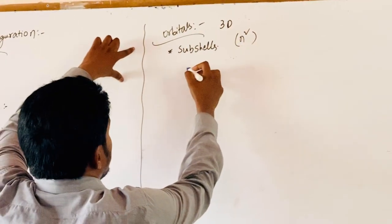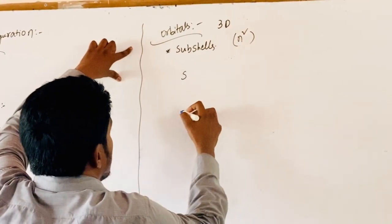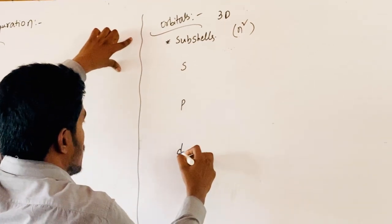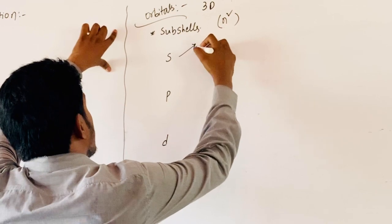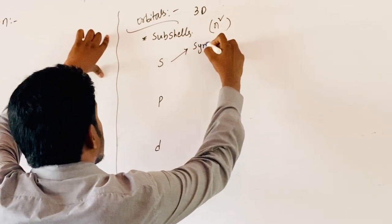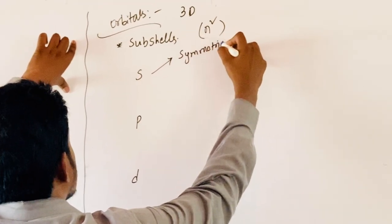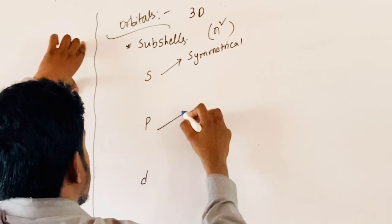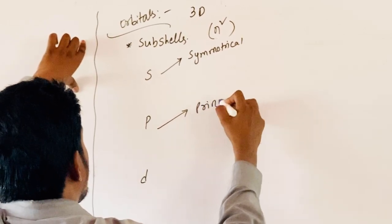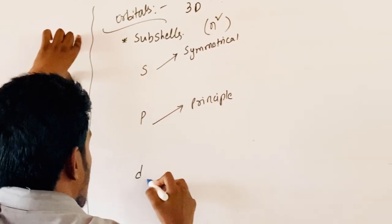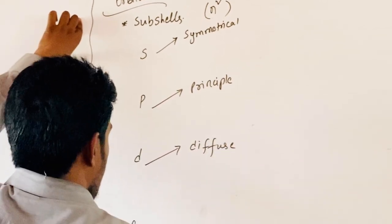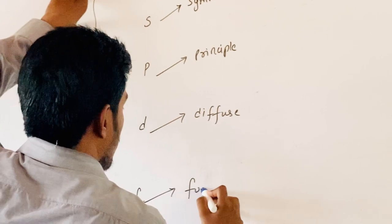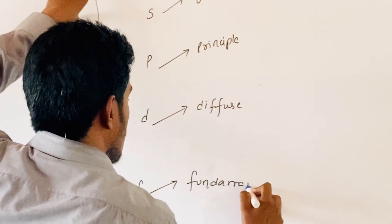The types of orbitals are S-orbital, P-orbital, D-orbital, F-orbital. S stands for symmetrical. P stands for principal. D stands for diffuse. And F represents fundamental.